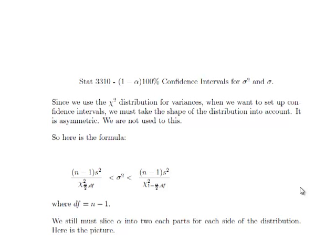Hi everybody, we're going to talk about confidence intervals for sigma squared and sigma now. We've been using the chi-square distribution for variances, so we have to use that for our confidence intervals, and we must take the shape of the distribution into account. It is asymmetric, which is unlike the normal distribution that we have been using.